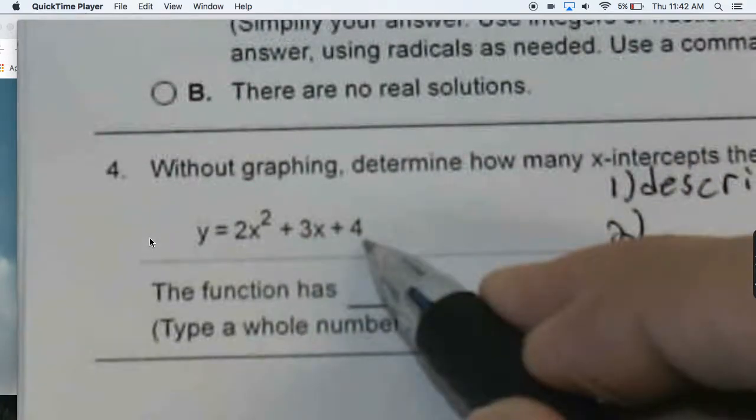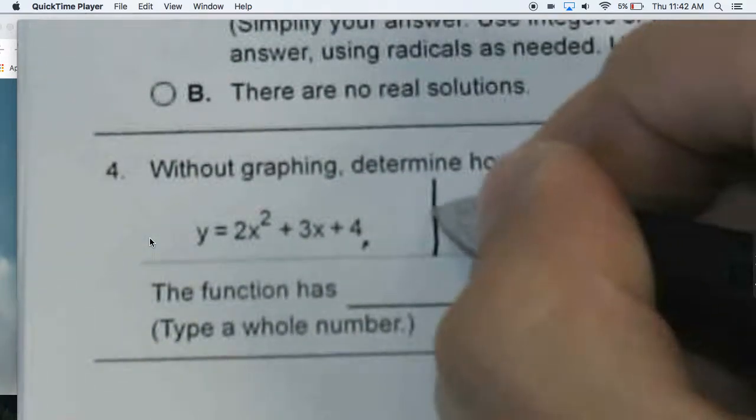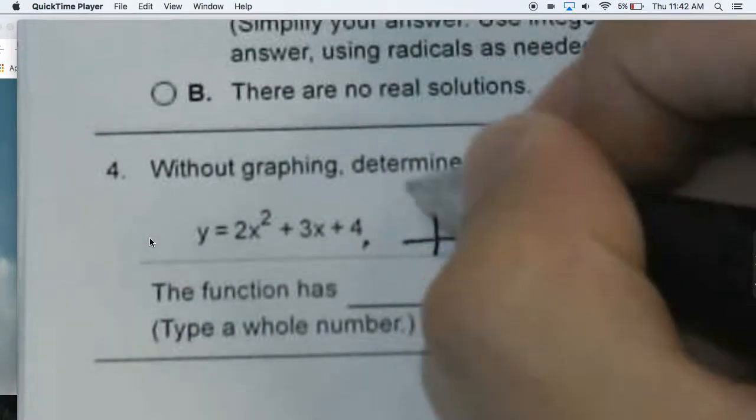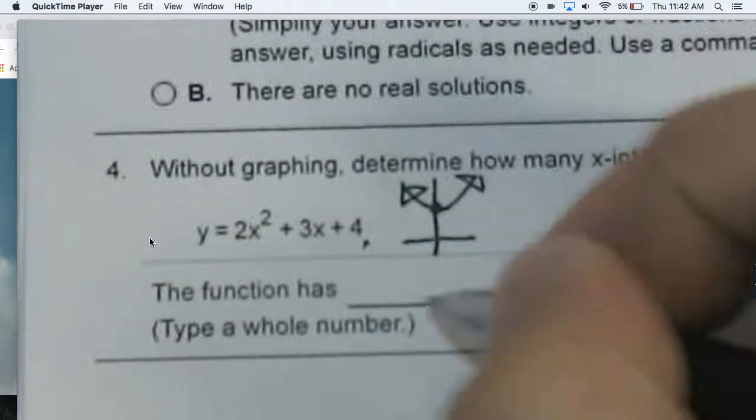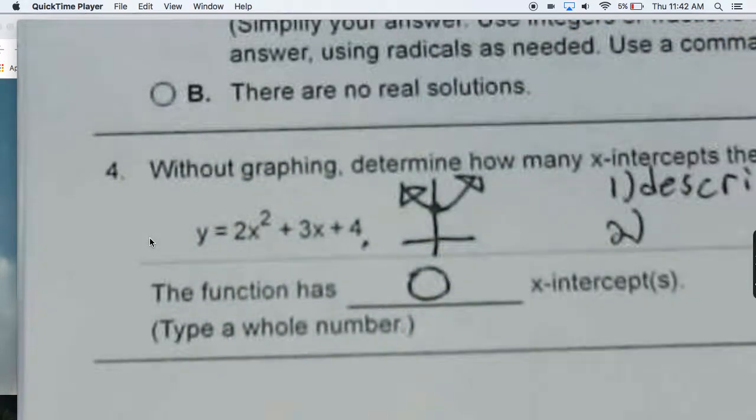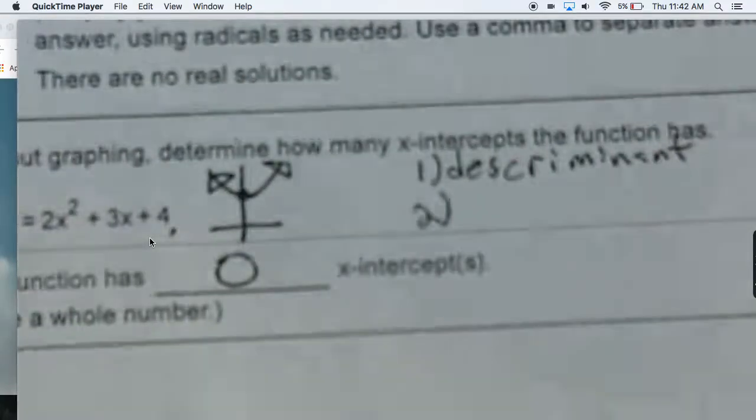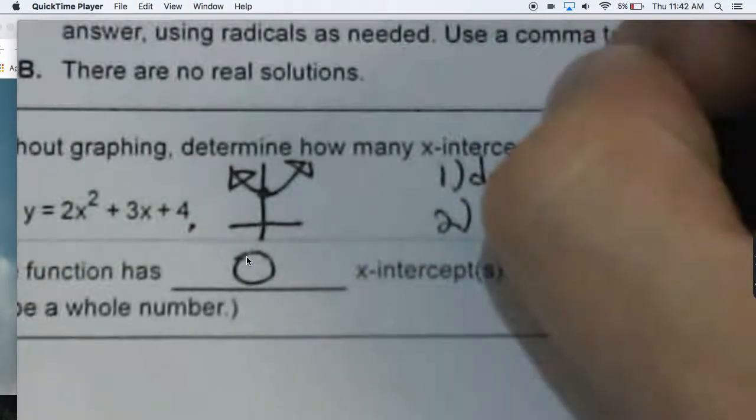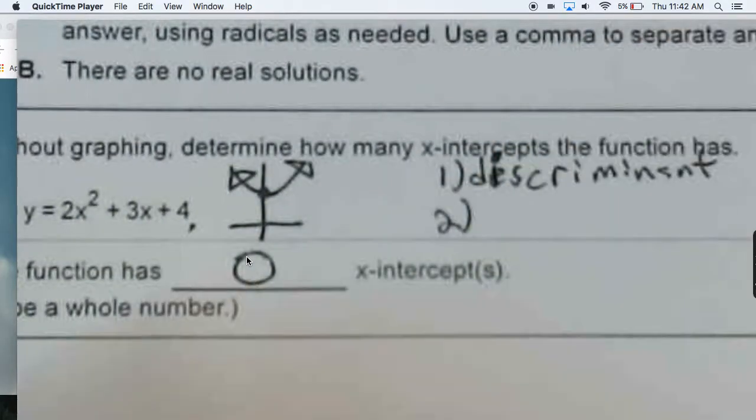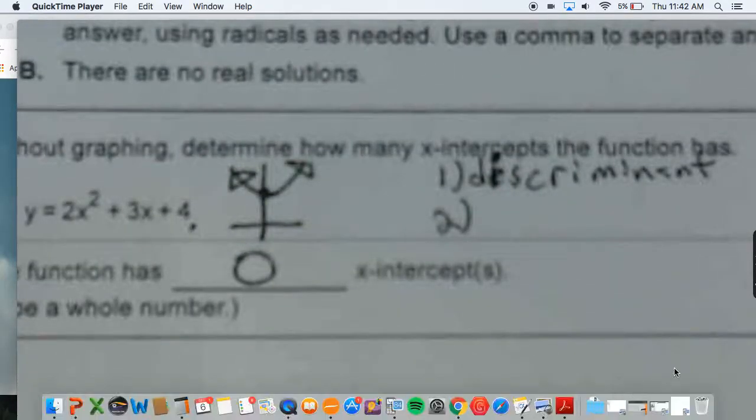Or you could just picture this. I mean, the y-intercept's positive 4, so it's going to have to be up here when you graph, and it's opening upwards. So just based off of these two facts, you could say that there are going to be no solution x-intercepts.